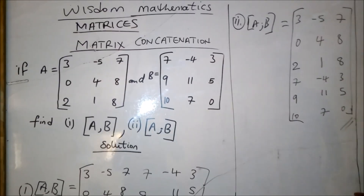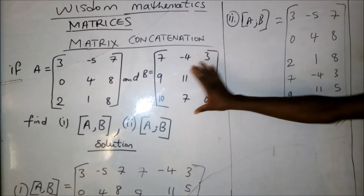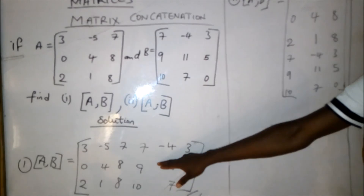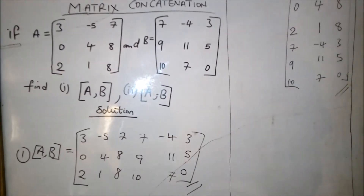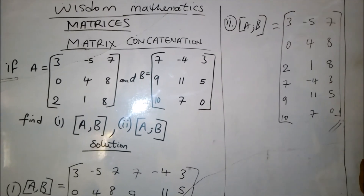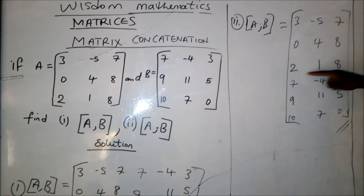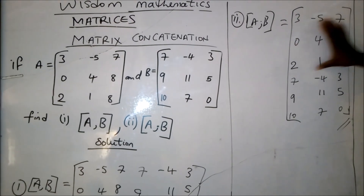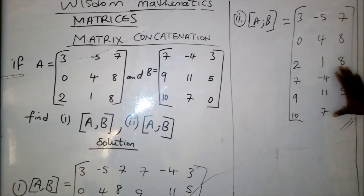In matrix concatenation, for horizontal concatenation, you add the two matrices side by side using the comma notation. In vertical concatenation, you add the two matrices in vertical form — the first matrix will be on the upper part, while the second matrix will come underneath. Thanks.